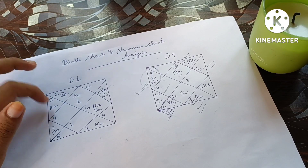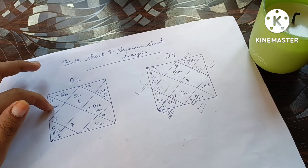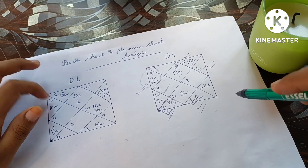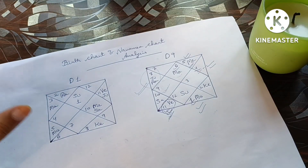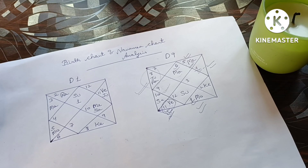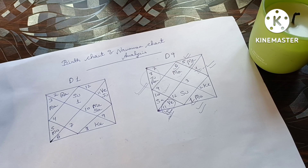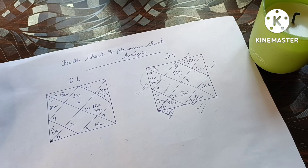Mars is good in the birth chart but in the Navamsha it is in an enemy sign. It is the ascendant lord and placed in the 1st house, meaning the native has too much anger. If the native is not able to control anger, they will definitely face serious issues and problems in life.